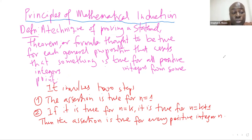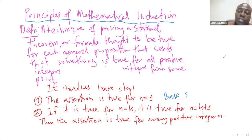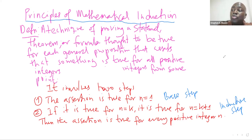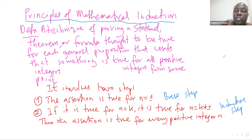The principle of mathematical induction usually involves two steps. The first step is called the base step, where the statement is true for the initial step, for n equal to 1. The second step is called the inductive step: if the assertion is true for n equal to k, then it is true for n equal to k plus 1. If this holds, then the assertion is true for every positive integer n.